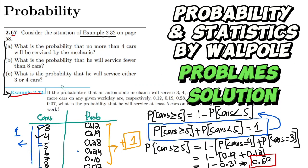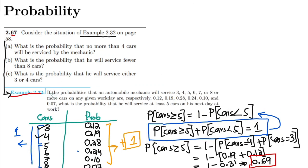Welcome, guys. In the previous video we have seen the solution of example 2.32 and obtained its answer. On the basis of it we have also seen the limits mentioned there and how these limits sum up to 1.